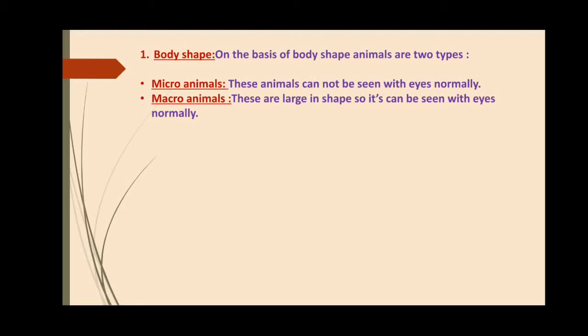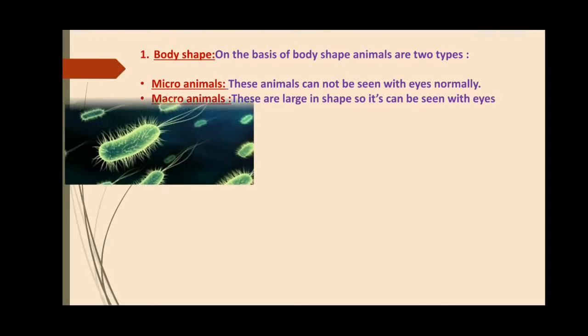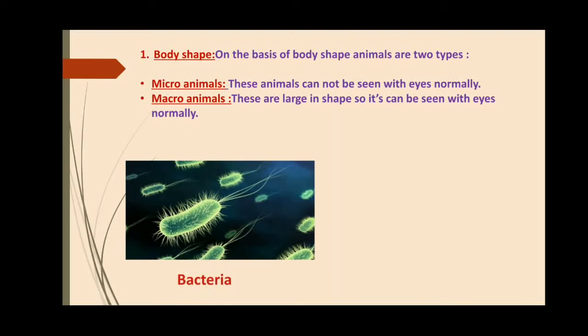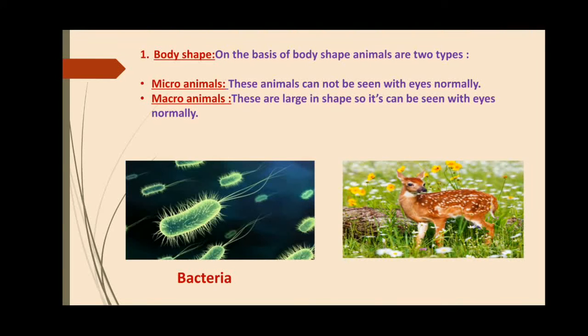Number one: body shape. On the basis of body shape, animals are two types. One is micro animals — these animals cannot be seen with the naked eye normally, like bacteria. Number two: macro animals — these are large in shape so they can be seen with the naked eye normally, like deer.